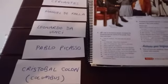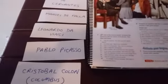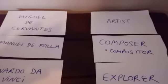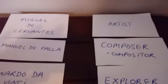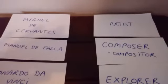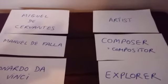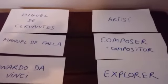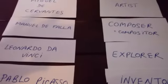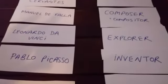What did each of those people do? Let's see. We have Miguel de Cervantes — artist. Is that correct? Manuel de Falla — composer. Is that correct? Leonardo da Vinci — explorer. Is that correct? Pablo Picasso — inventor. Is that correct?